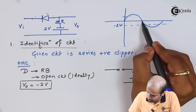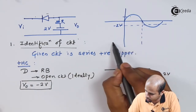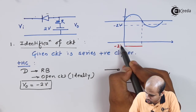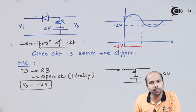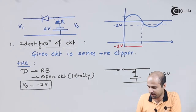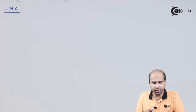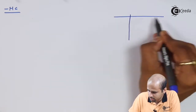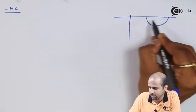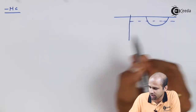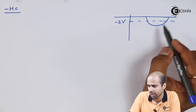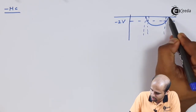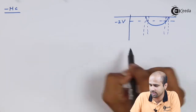We will draw this value of minus 2 volts over the positive half cycle portion of the output. Now we will go for the negative half cycle. In the negative half cycle, we divide it into three parts: this is the first region, this is the second region, and this is the third region — bifurcating the complete negative portion, with the bias voltage of minus 2 volts as the dividing reference.